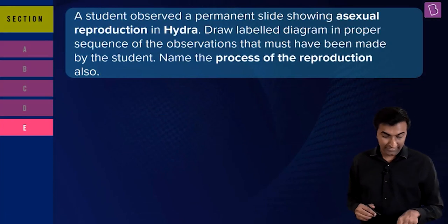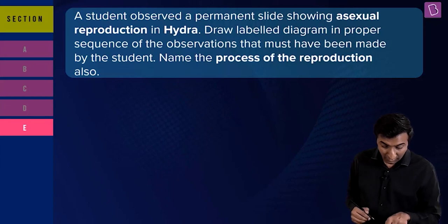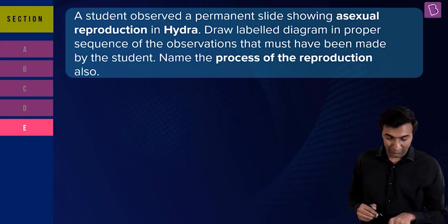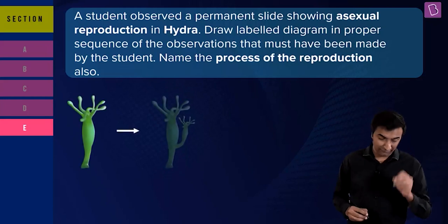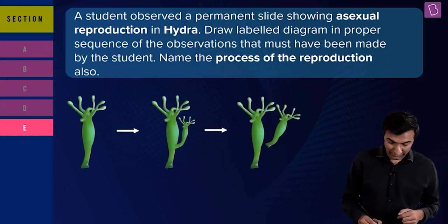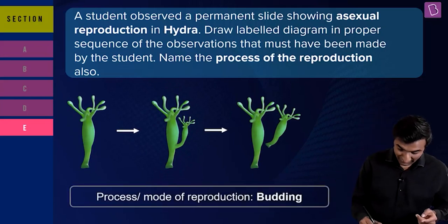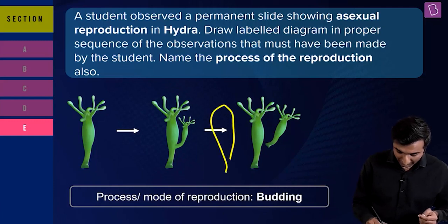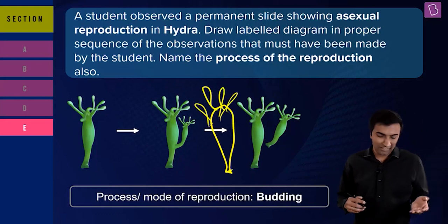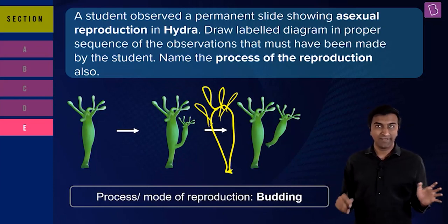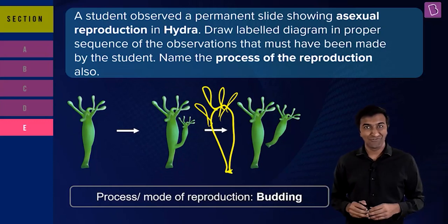Another biology question: 'A student observed a permanent slide showing asexual reproduction in Hydra. Draw a labelled diagram in proper sequence of observations. Name the process of reproduction also.' The process is budding. You need to label the small bud and related parts. Figure out quick hacks for drawing diagrams — then beautify and label them. That's what the World of Living unit was all about.